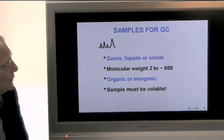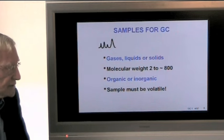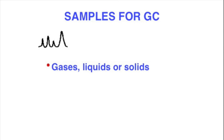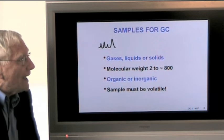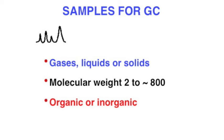Samples for GC, they can be gases. To my knowledge, almost every gas has been analyzed, liquids, and some solids. Solids are usually dissolved in a low boiling solvent and analyzed. Molecular weights have been done easily from molecular weight of two, hydrogen, up to over 800. In exceptional cases of simple hydrocarbons, molecular weights up to 1200 have been separated. Samples can be organic or inorganic, but most of the work with gas chromatography are organic compounds. Typical examples of inorganics would be water or gases.